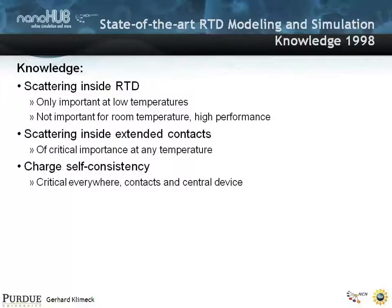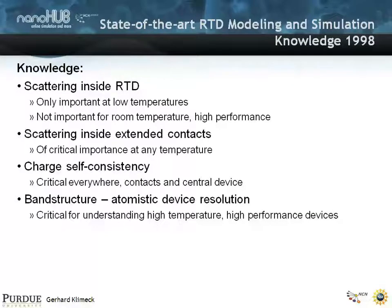Charge self-consistency is critical everywhere — in the contacts and in the central device region. A mickey-mouse device in terms of contact modeling will not give you anything quantitative. You're living in a widely connected world where the device is connected to contacts, and if you leave those out, you cannot model the device. Band structure — which we're going to focus on in the next few lectures — is the critical element to really get valley current right. For high-temperature, high-performance devices at room temperature, atomistic tight-binding-based band structure is really critical.